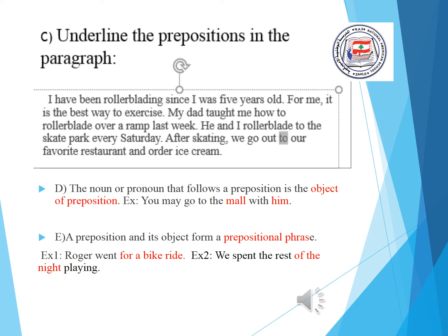What do we call the noun or pronoun that follows a preposition? The noun or pronoun that follows a preposition is the object of the preposition. For example: 'You may go to the mall with him.' Mall and him are objects of prepositions. Mall is a noun and him is a pronoun.